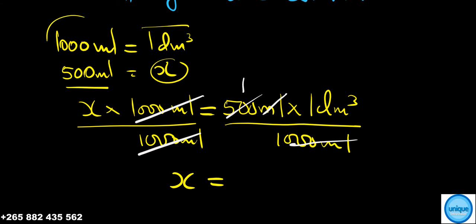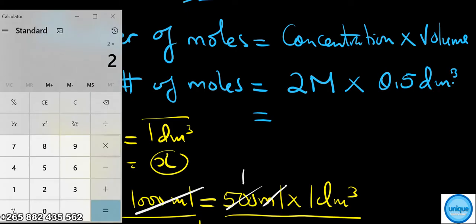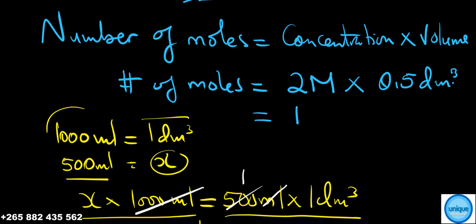We get 500 over 1000, that's a half, which is 0.5 dm³. So we have 2 times 0.5, that's 1. We have 1 mole. That's the first step - the number of moles.